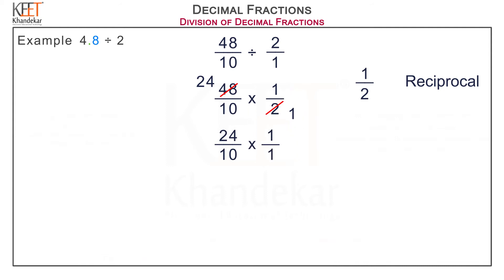Now it is multiplication of common fractions. So we get 24 into 1 upon 10 into 1, which on multiplication gives 24 upon 10.